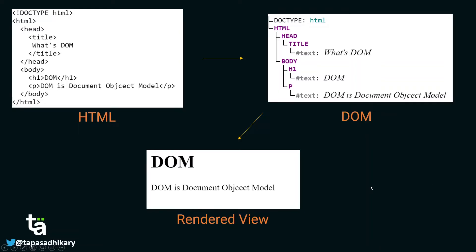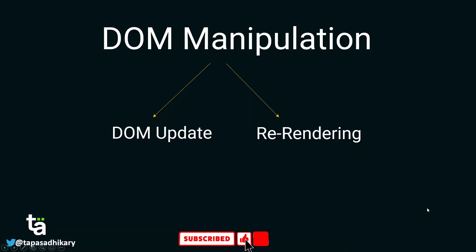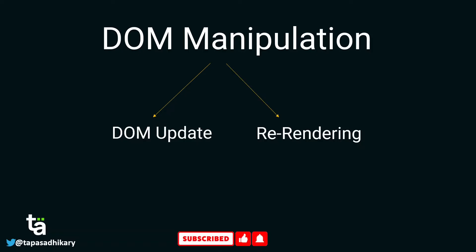Now we have an understanding of DOM. The next concept is DOM manipulation. DOM manipulation comprises three things: first, querying the DOM — finding an element in the DOM tree; second, updating the DOM — changing a value; and third, rendering, or re-rendering on the browser after the update happens. So querying, DOM update, and re-rendering are the three parts.